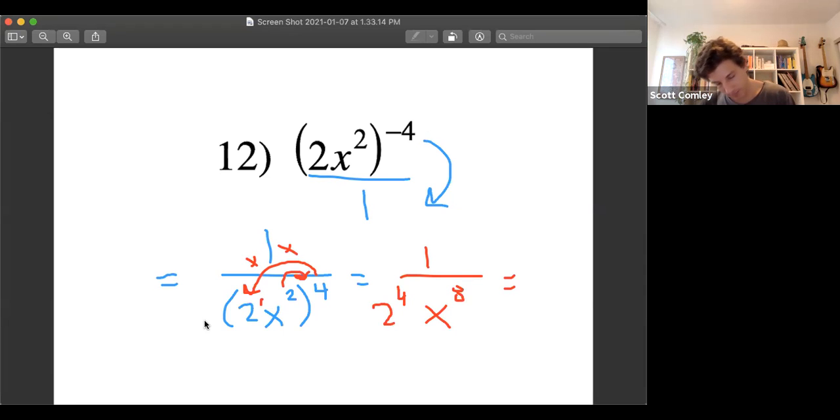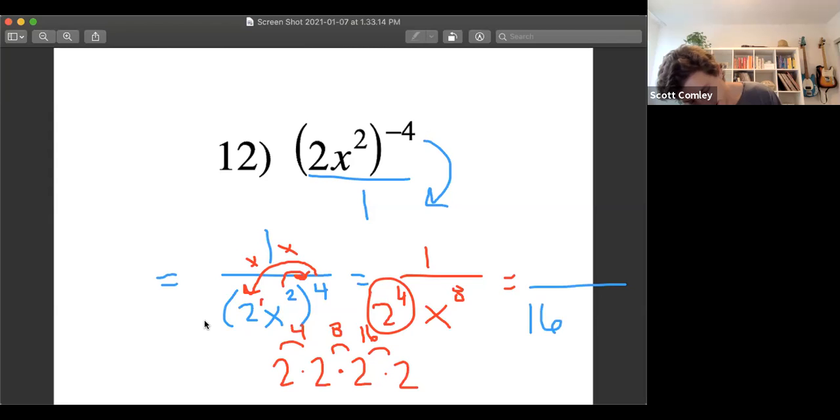And if we really want to get fancy, we have to figure out what's two to the fourth, two times two times two times two, that's two to the fourth. Exponent means times itself. Two times two is four times two is eight times two is 16. So all together now, would be 16 x to the eighth, one over 16 x to the eighth.